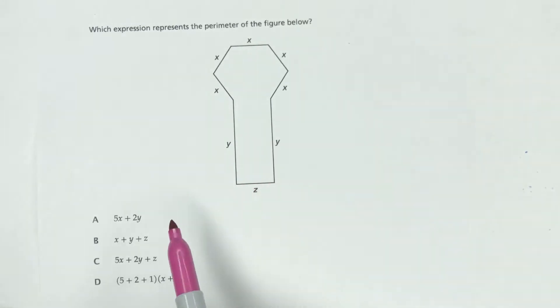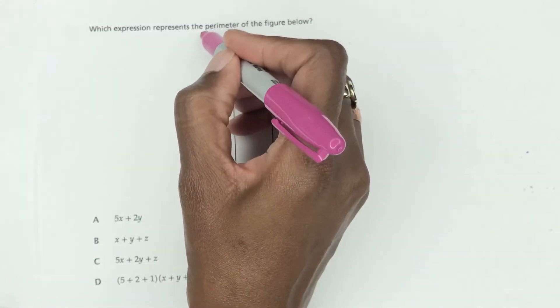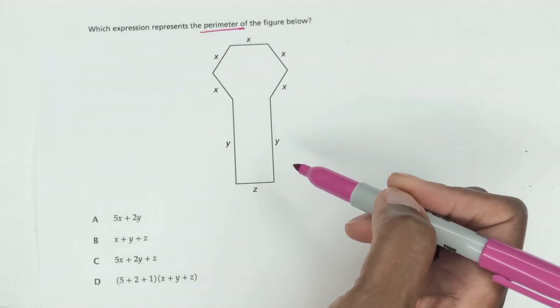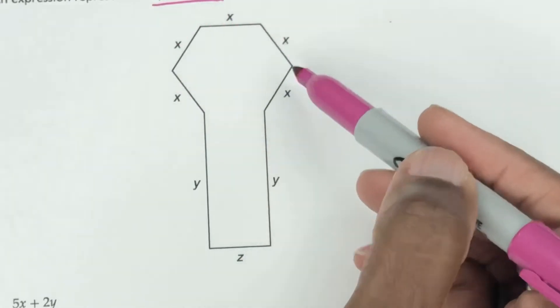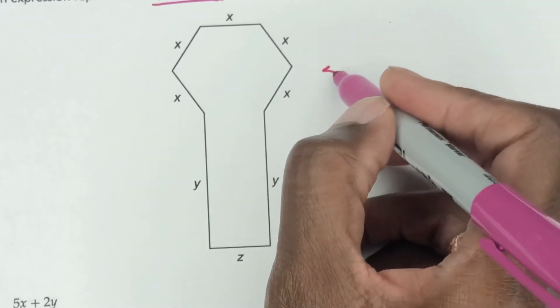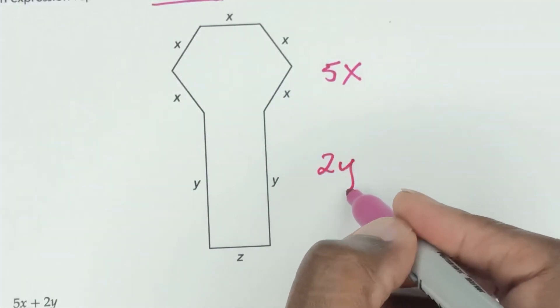Basically what you're doing, you're seeing all these choices here and perimeter means to add all the way around. When you're looking at this, how many x's do you see? 1, 2, 3, 4, 5, so there's 5 x's. And how many y's? There's 2 y's.